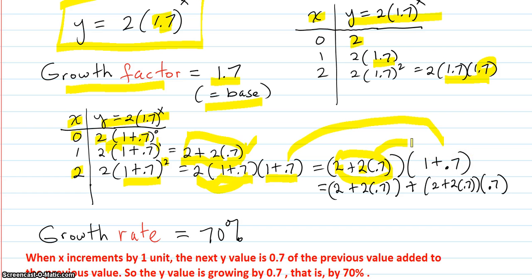When you distribute that onto the two numbers, you're going to get this times 1 is this. That's the previous. Plus this previous times .7. So again, you're getting .7 of the previous added to the previous. That sounds like .7 growth rate or 70% growth rate. So the growth rate is 70%.